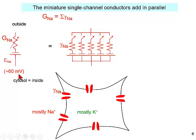Physical chemistry at the level of ions going through, electricity at the level of an equivalent circuit. Would anyone like me to use more words or different words to describe this?